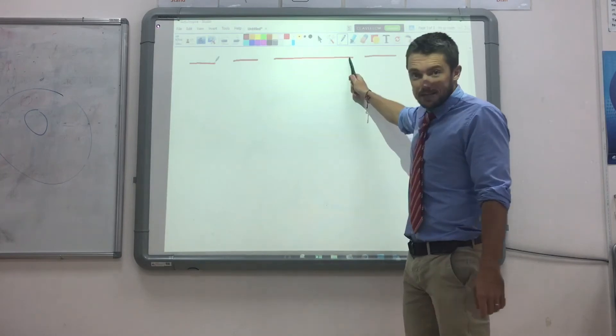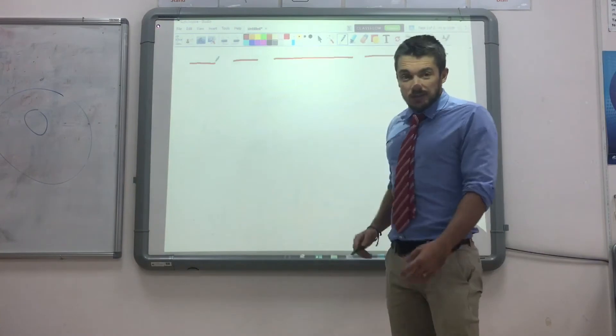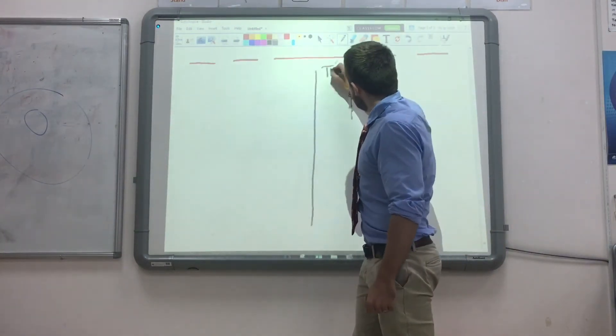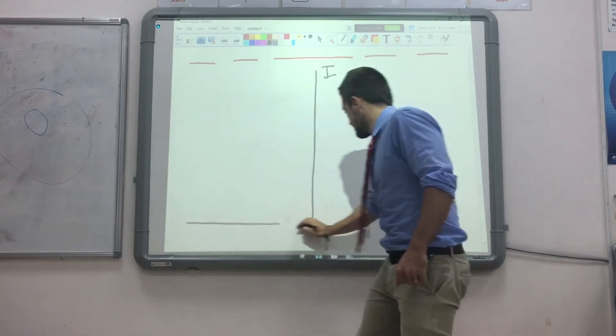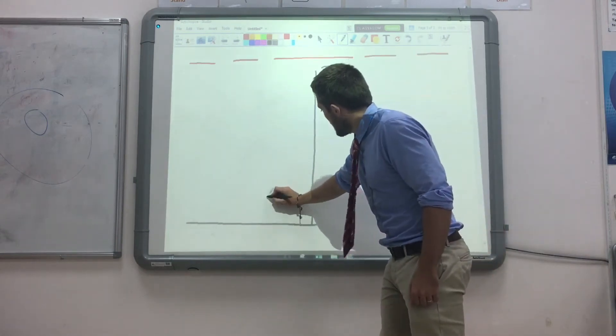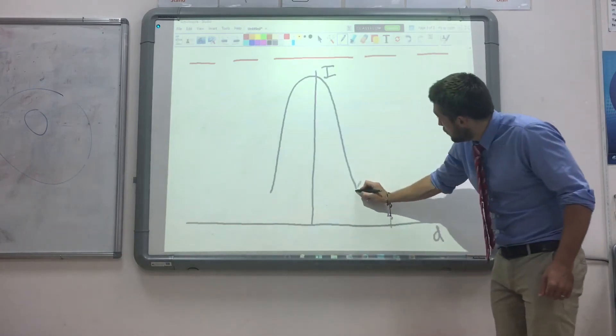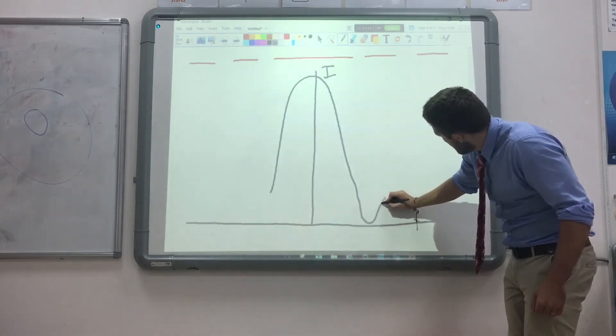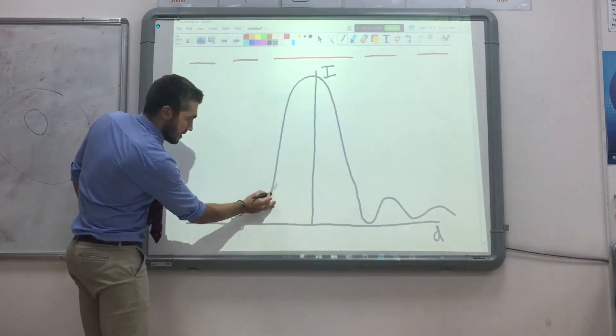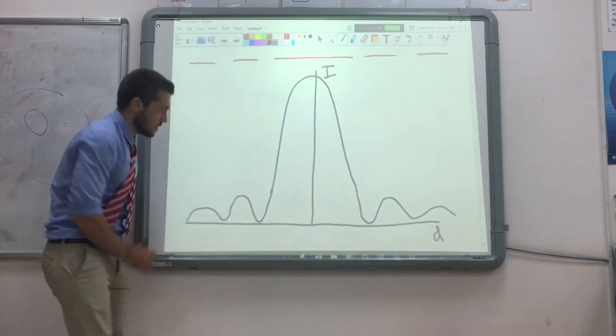We had the wide central maximum and then the smaller ones on either side. Now the wide central one was much brighter, so if we were to draw a graph of intensity against distance, we would have a big peak here and then much smaller peaks here and here. And we would have the same on the other side, like that.